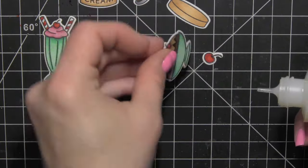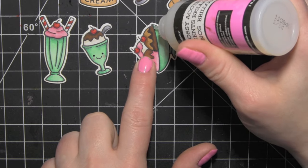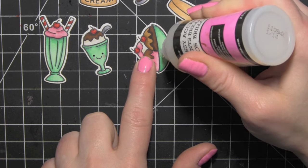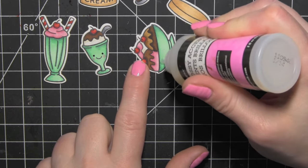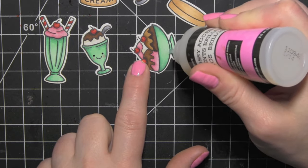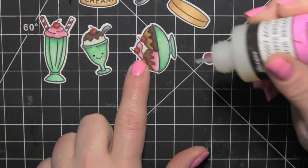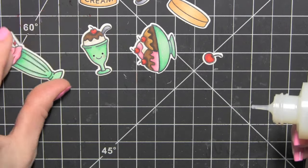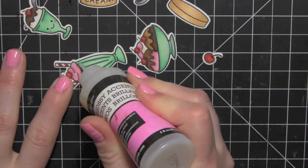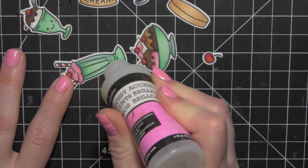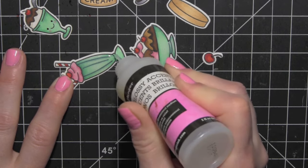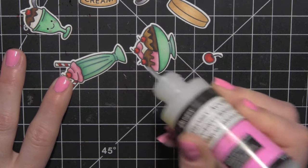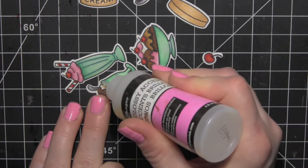Then I'm going to take glossy accents and apply a layer of glossy accents to all of the dishes, so just the three aqua dishes only. Kind of give them a look of maybe some glass or glossy dishes. You're going to want to set the images aside to dry for a nice long while. I would say probably an hour for a really good dry time.